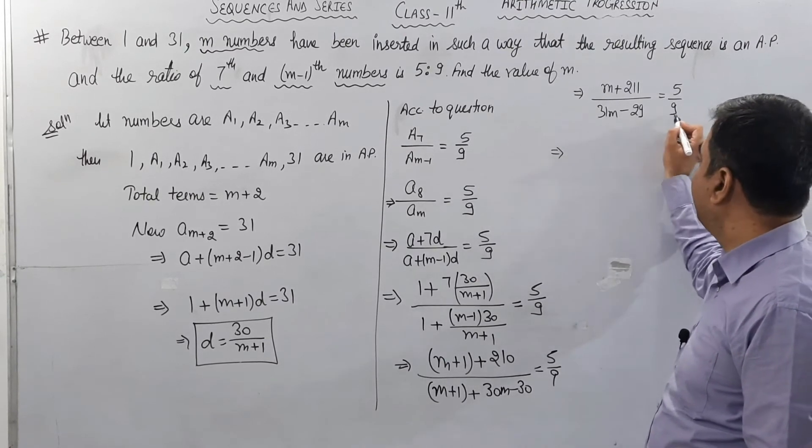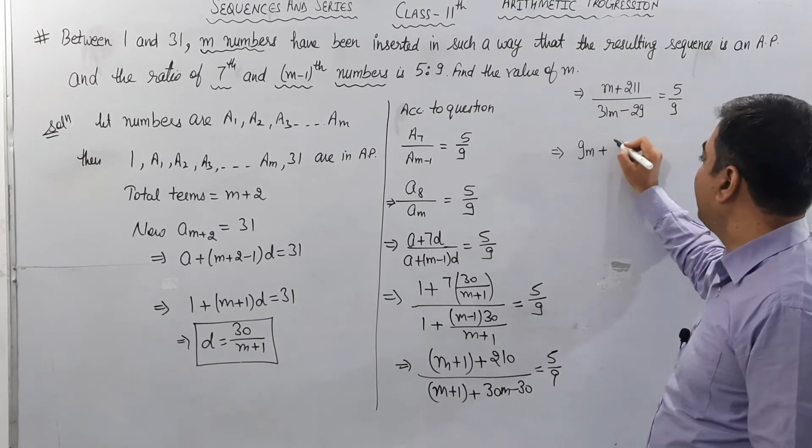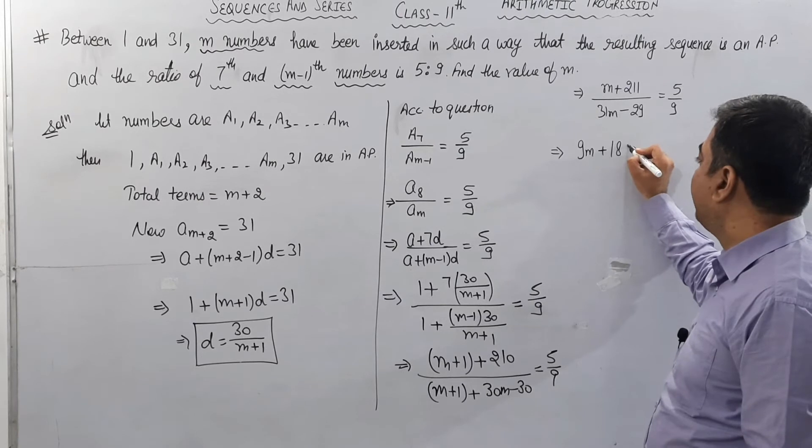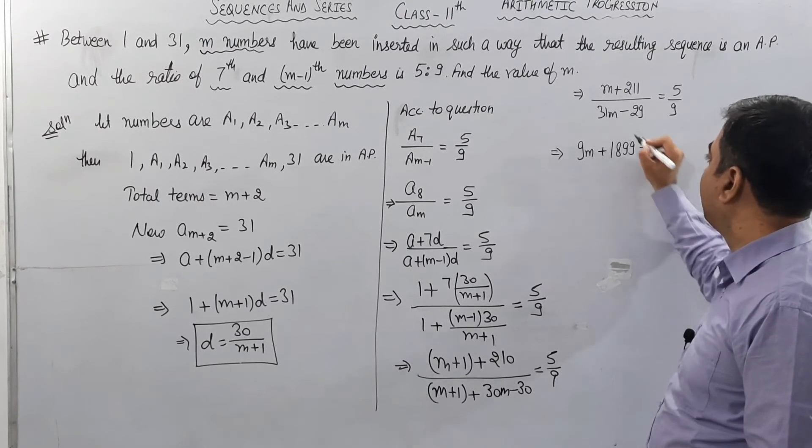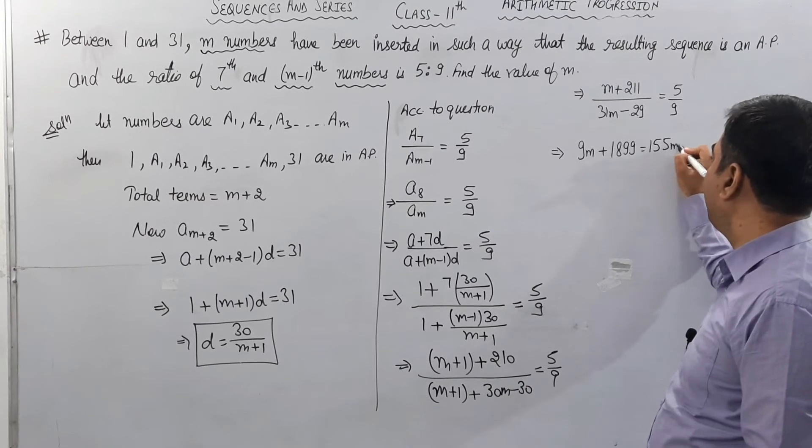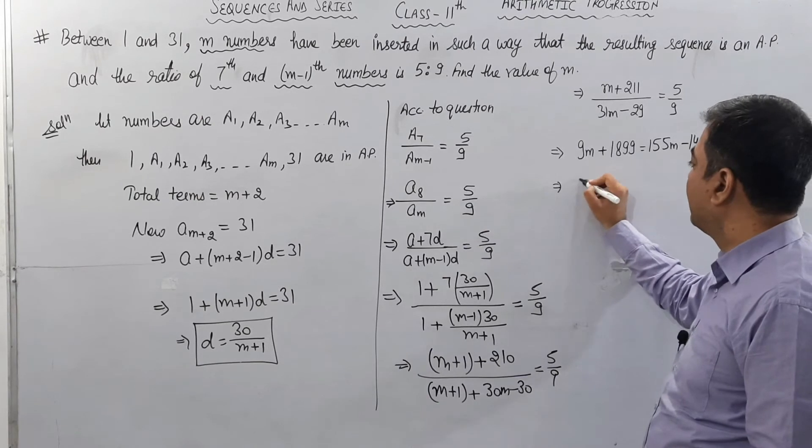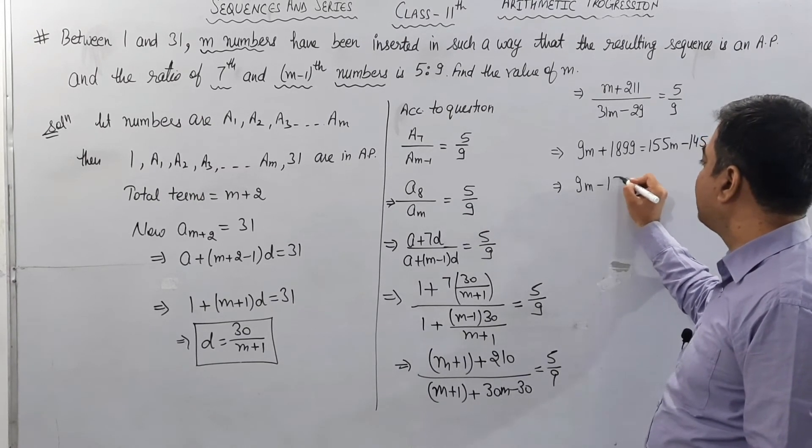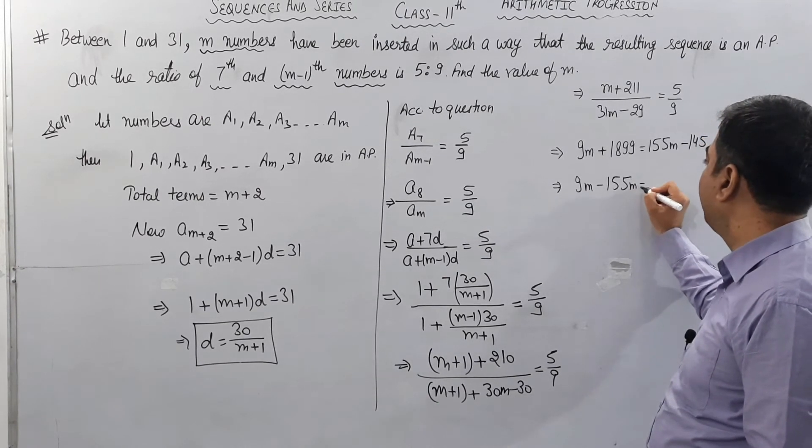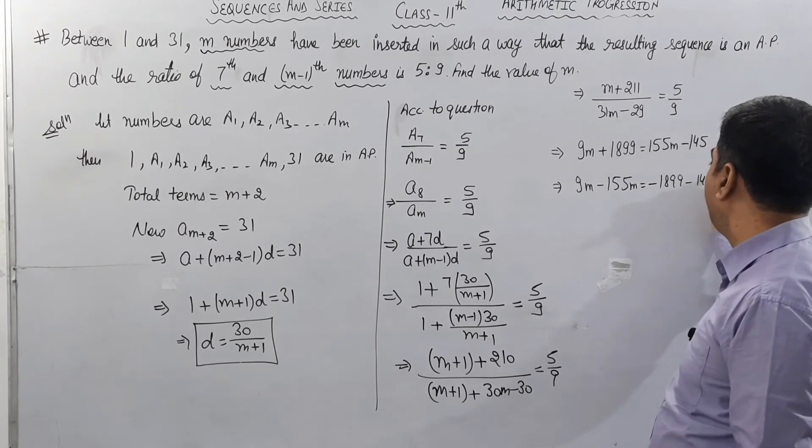Now cross multiply: 9 multiply with m, we get 9m. 9 multiply with 211, we get 1899. 5 multiply with 31m, we get 155m. 5 multiply with -29, we get -145.